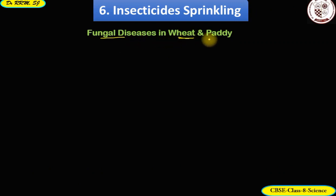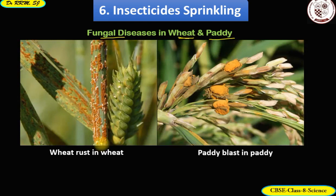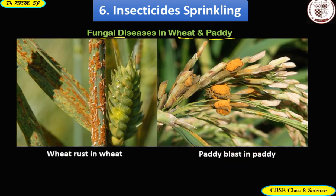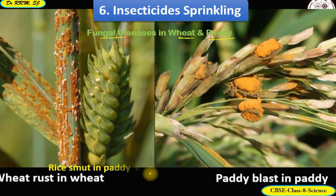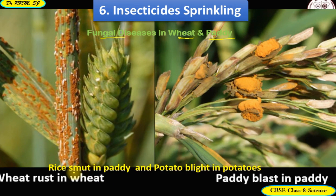For fungal diseases, here are four examples: wheat rust disease in wheat crop, paddy blast disease in paddy crop, rice smut in paddy, and potato blight in potatoes. These diseases are all caused by fungi.